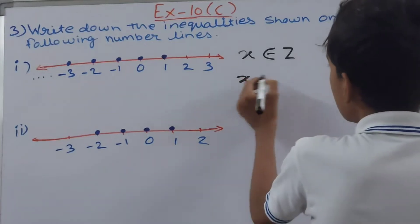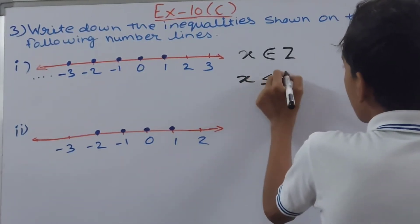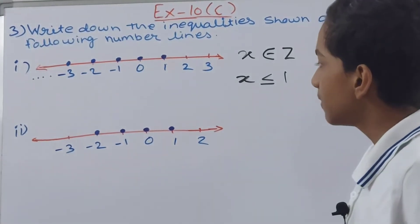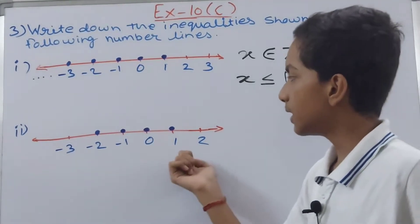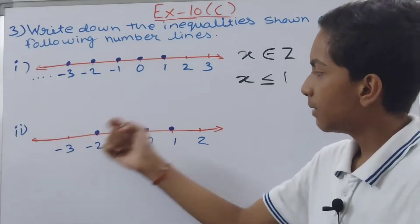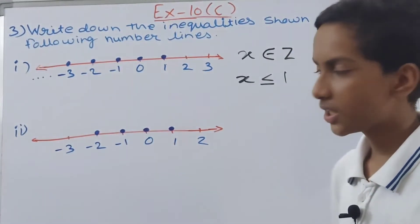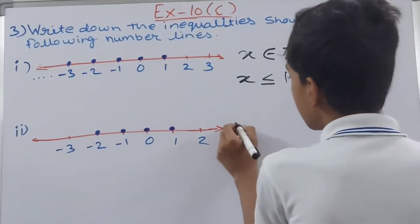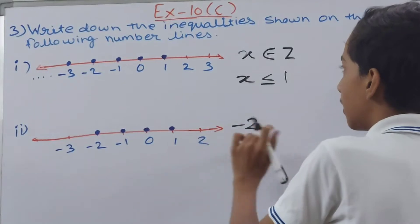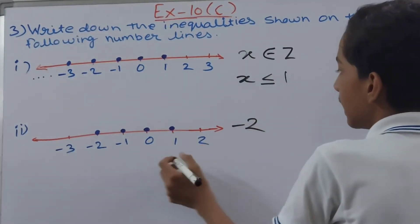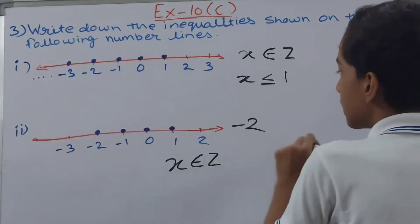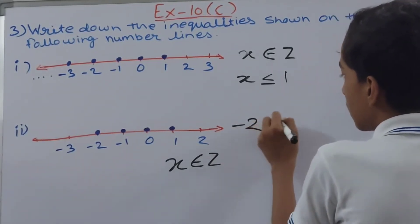Let us move on to the next part. Now here in this you see the 1, 0, -1, and -2 are the numbers shaded. So first of all you write -2 here, we start from -2. Again you have to write that x belongs to integers. Don't forget to write this.